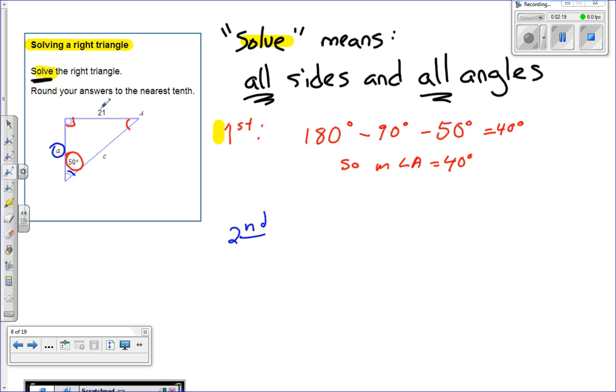That means I want to use the opposite and the adjacent because opposite is 21, adjacent is here. So if I'm using opposite and the adjacent, that tells me that's tangent. Tangent of theta is equal to opposite over adjacent.